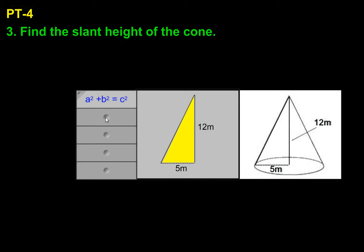We'll plug these numbers into the Pythagorean Theorem. 5 squared plus 12 squared equals c squared, which brings us to 25 plus 144 equals c squared. The square root of 169 equals the square root of c squared, which gets us to 13. So the slant height of the cone is 13 meters.